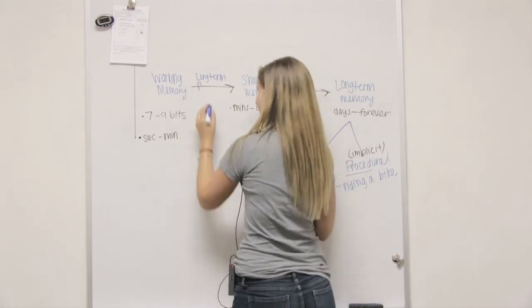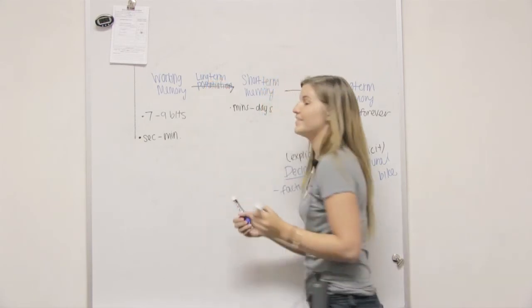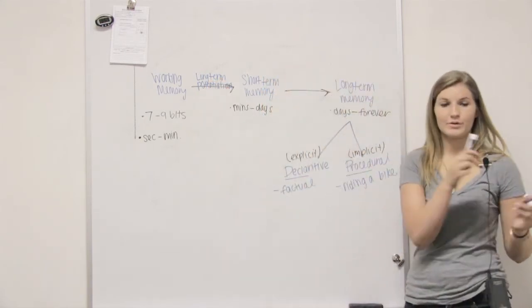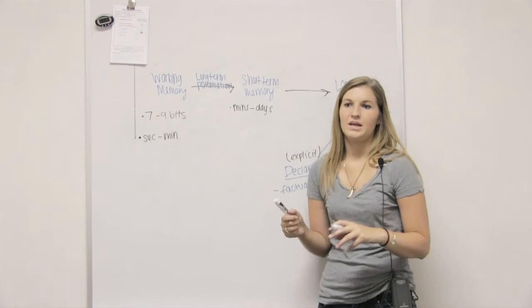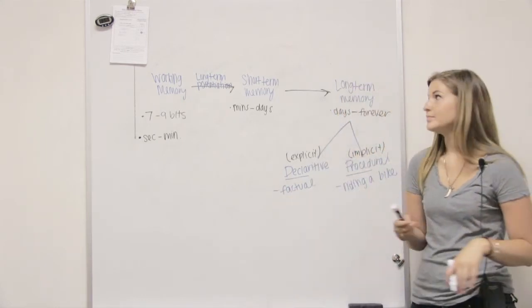So then there's two processes that we'll do. So there's two processes that we have to do to either get from working to short-term and then short-term to long-term. The one you were talking about was called long-term potentiation. Don't let the name confuse you. We're going from working to short-term. It's long-term potential, but we're not at long-term yet.